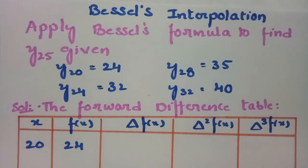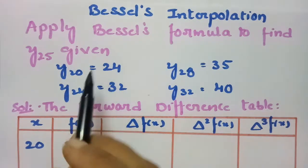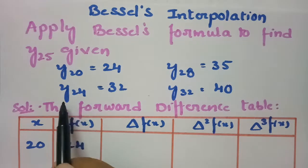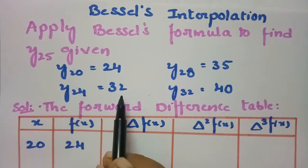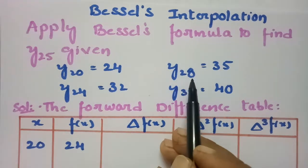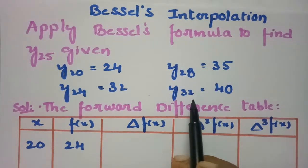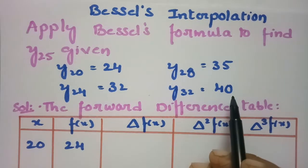I am going to apply Bessel's formula to find y(25), given y(20)=24, y(24)=32, y(28)=35, and y(32)=40.